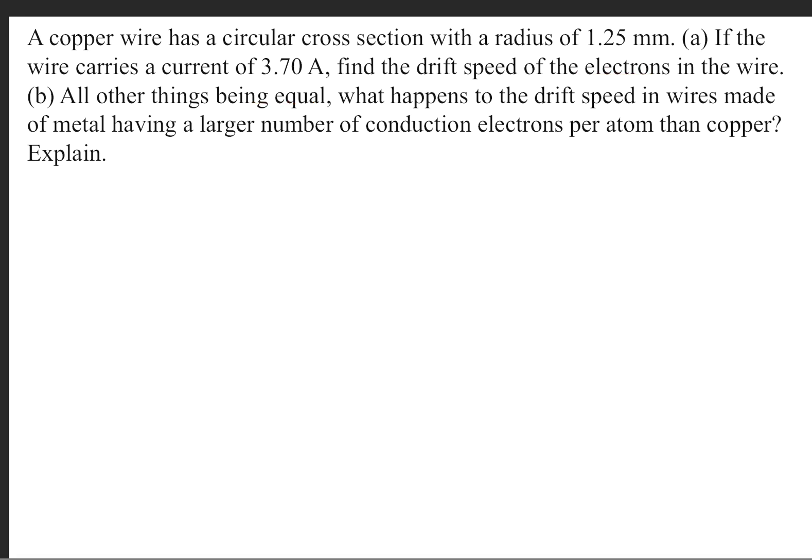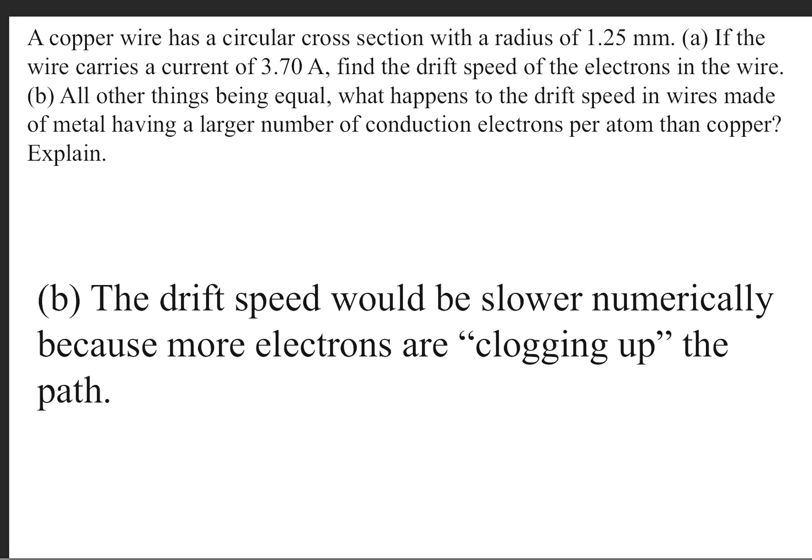Part B is asking what happens to the drift speed in wires made of metal having a larger number of conduction electrons per atom than copper. The drift speed would be slower numerically because more electrons are clogging up the path.